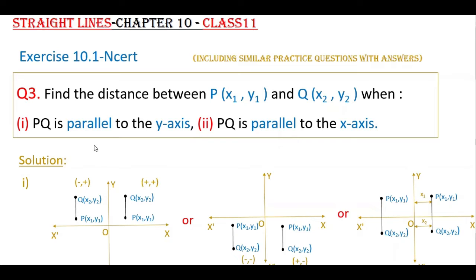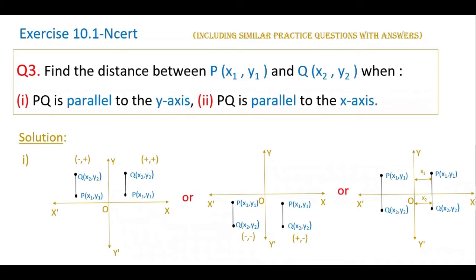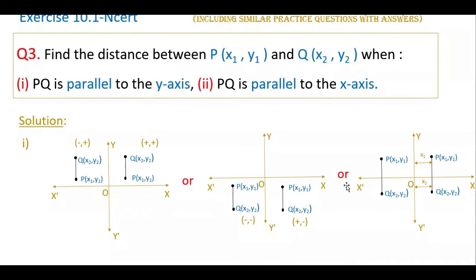Here the first condition is: two points are given and PQ is parallel to the y-axis. They did not mention any quadrant. The points are in any quadrant. If you see these figures, you will understand PQ can be in the first quadrant, or second, or third, or fourth, or one point can be in the first quadrant and second point can be in the fourth quadrant, because the condition given is it is parallel to the y-axis.